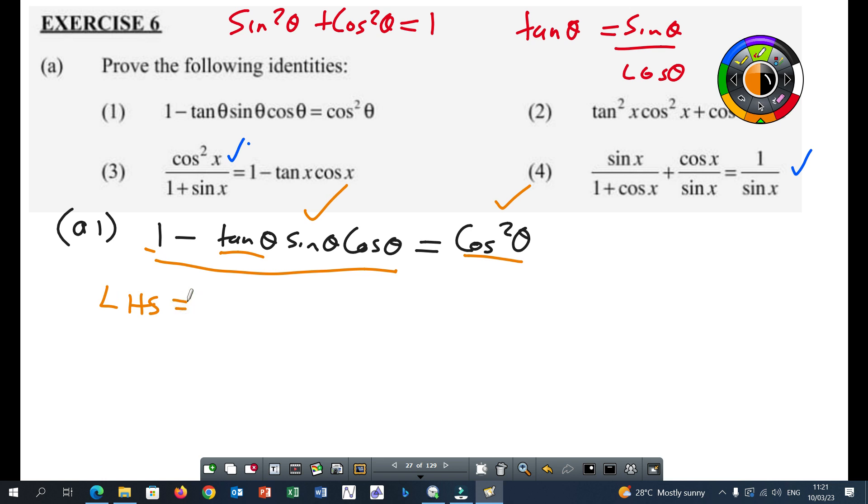So our left hand side, we are going to simplify it. It's one minus... At this stage, let's not touch this one here. Let's convert the tan to what? Sine over cos. So this will be sine theta over cos theta times sine theta times cos theta. Yes, there's multiplication. If there's no operation here, it means there's what? Multiplication. You should know that by now.